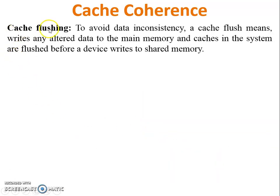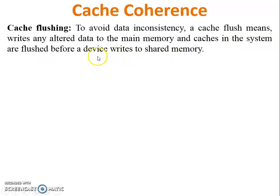The last approach is cache flushing. To avoid data inconsistency or the cache coherence problem, a cache flush writes any altered data to both main memory and cache memory. The cache is flushed before a device writes to shared memory, so that before any other device accesses shared memory, the modified data is updated in both cache memory and main memory.